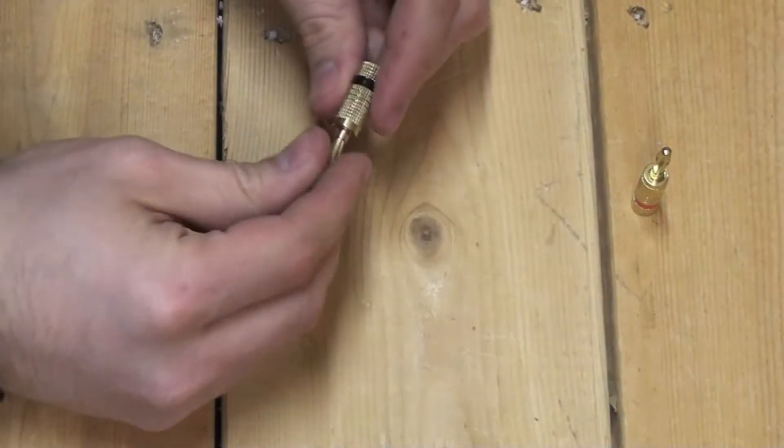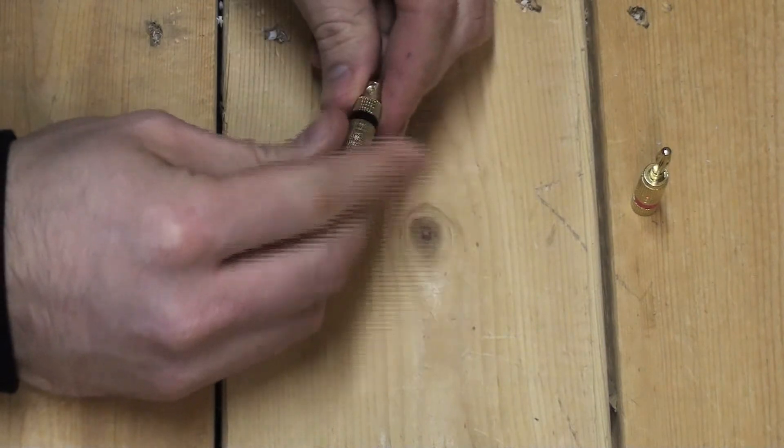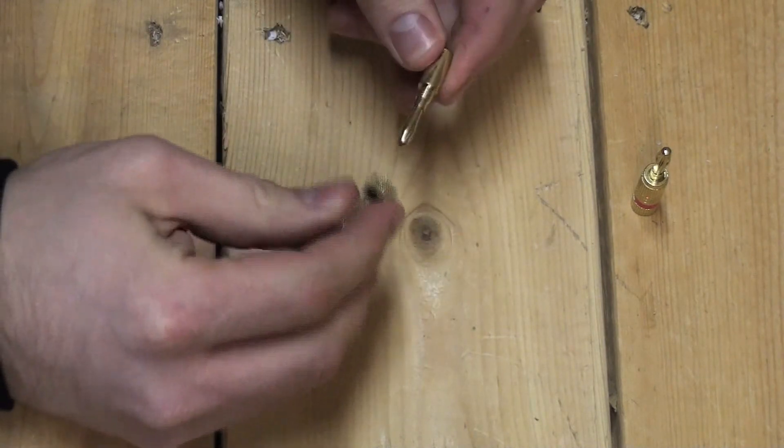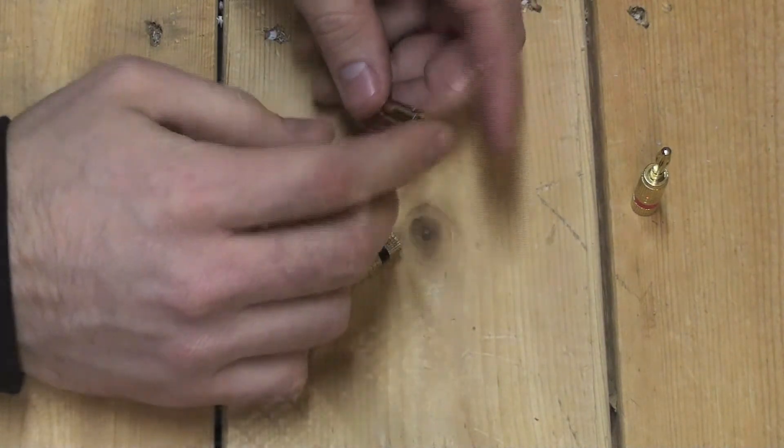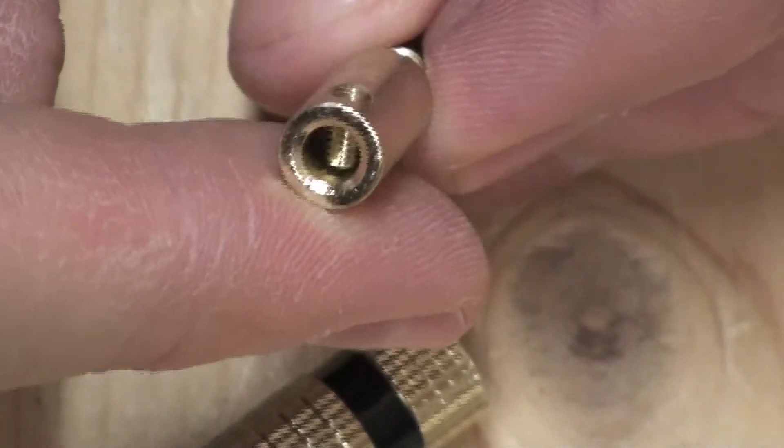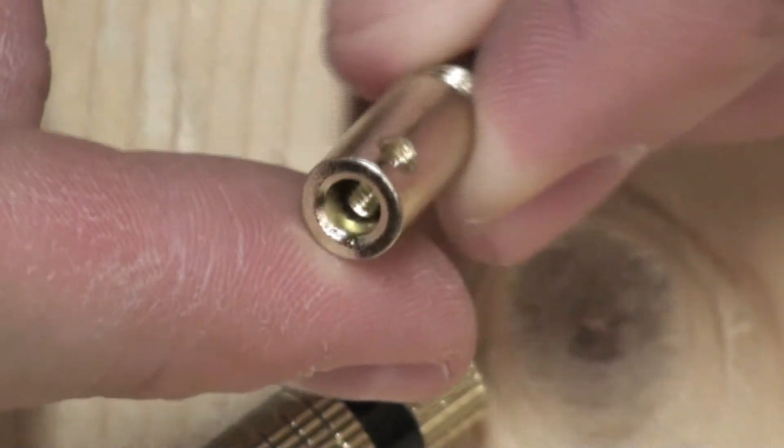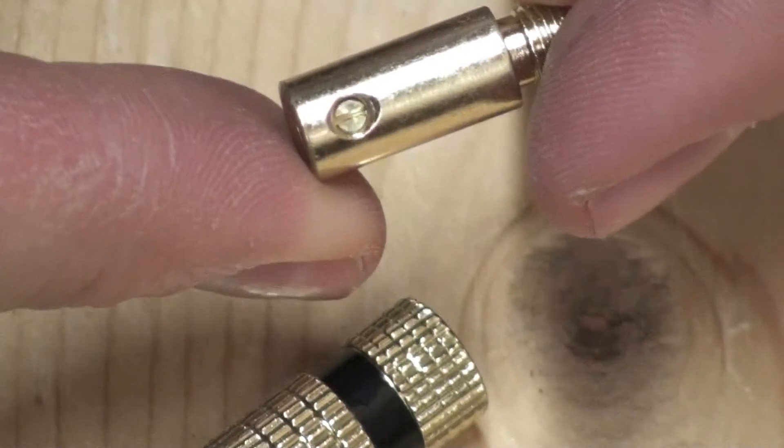You'll need to start by unscrewing the outer protective casing to expose the underlying screw terminal. As you can see there is a solderless screw terminal that acts to pinch the connection wire into the banana plug.